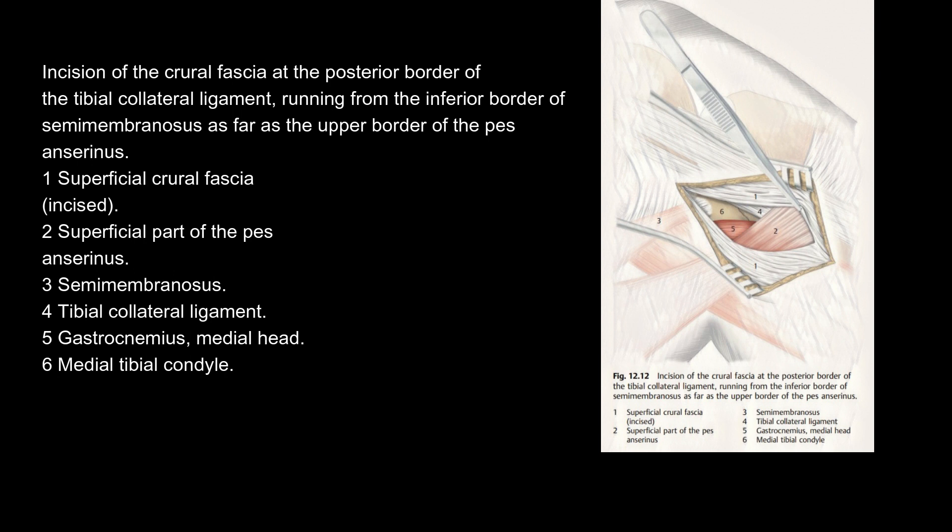After incision of the superficial crural fascia, the following structures are identified: superficial part of the Pes anserinus, semimembranosus, tibial collateral ligament, gastrocnemius medial head, and medial tibial condyle.